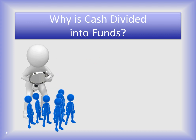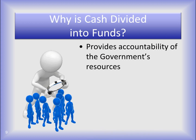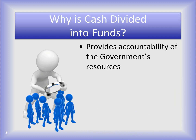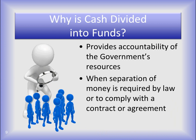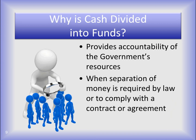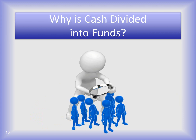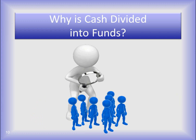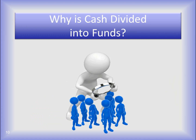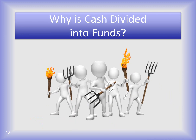You want to know why cash is divided into funds. The very basic answer is that it provides accountability of the government's resources when the separation of money is required by law or to comply with a contract or agreement. Residents should be able to scrutinize their government and determine if the money is being spent for the purpose it was collected. Don't we all want to know if our tax dollars are being spent correctly? You don't want an angry mob on your hands.